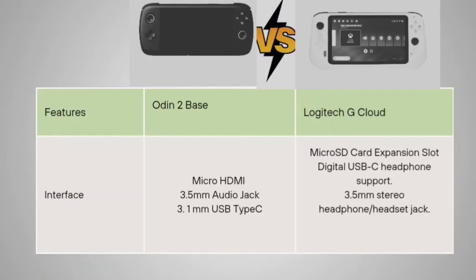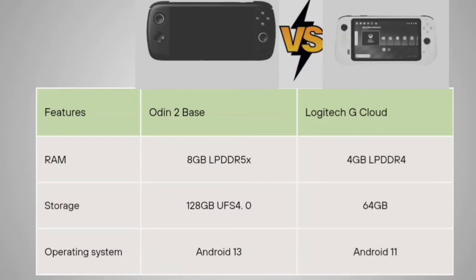Coming to the interface — how you can connect devices. The Auden 2 Base has a micro HDMI port, 3.5mm audio jack, and USB Type-C 3.1 port. Your Logitech G Cloud is having a micro SD card expansion slot, digital USB-C, headphone support, and a 3.5mm stereo headphone jack.